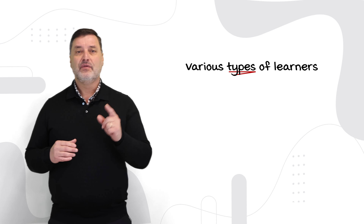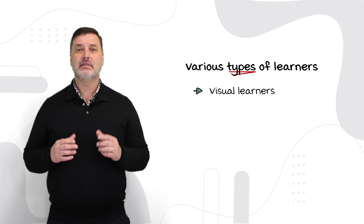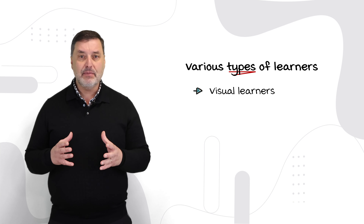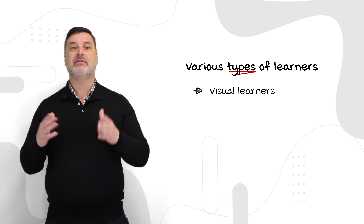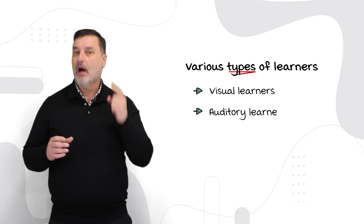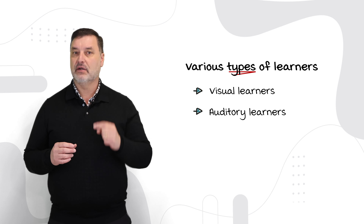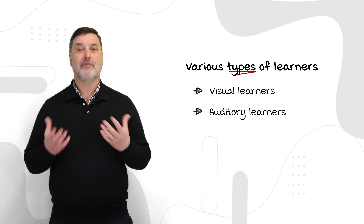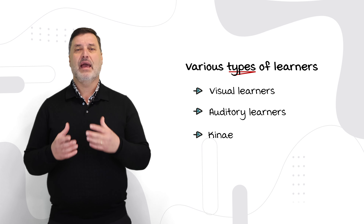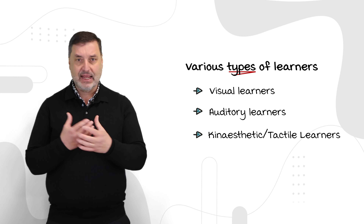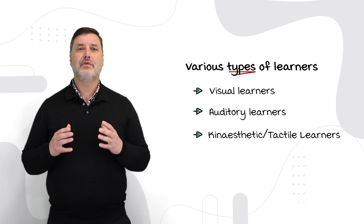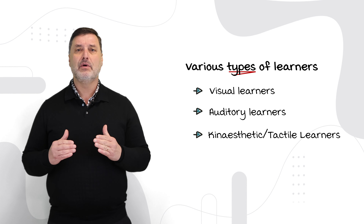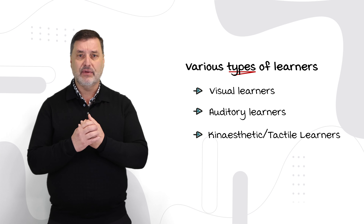In our classroom, we have various types of learners. Visual learners that need visual aids like images, graphs, and videos to learn. Auditory learners that learn best through listening and verbal communication. We have the kinesthetic tactile learners that learn through physical movement and hands-on activities.